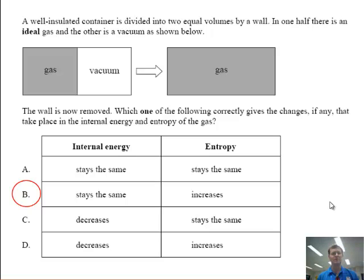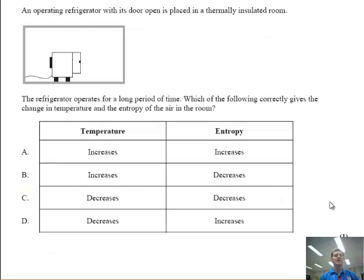I've got one final example for you to try and get your head around this concept of entropy. An operating refrigerator with its door open is placed in a thermally insulated room. The refrigerator operates for a long period of time. Which of the following correctly gives the change in temperature and the entropy of the air in the room? Now, think about this carefully. What's happening here? What's going to happen to the temperature? What's going to happen to the entropy?